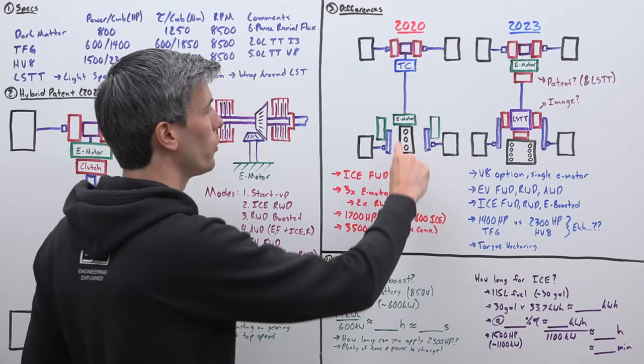Another analogy for why this is kind of a silly question is think about, how long can you drive this combustion vehicle with 1500 horsepower? We have a 115 liter fuel tank, about 30 gallons. Each gallon has the equivalent energy about 33.7 kilowatt hours. That means we have a fuel tank holding about a thousand kilowatt hours of energy.